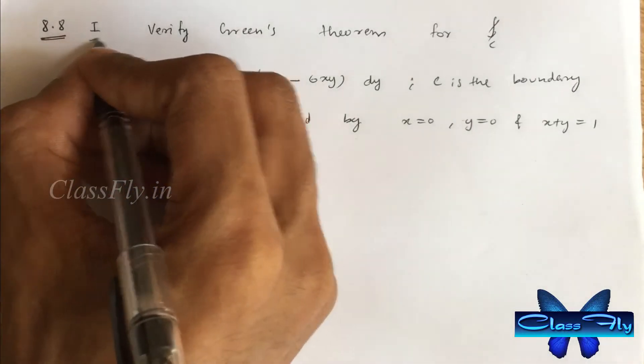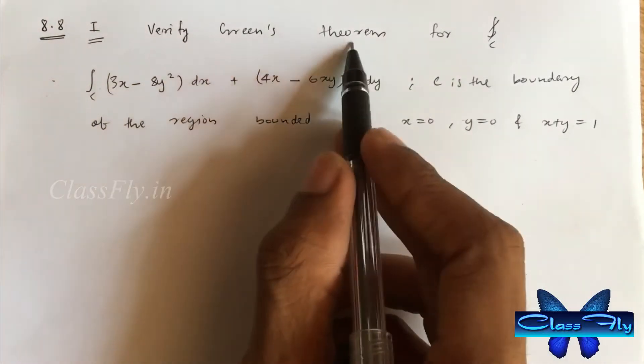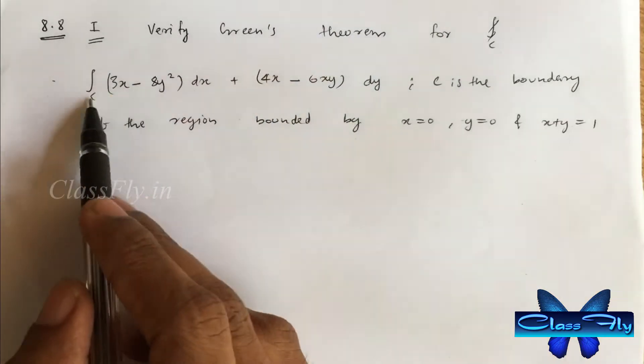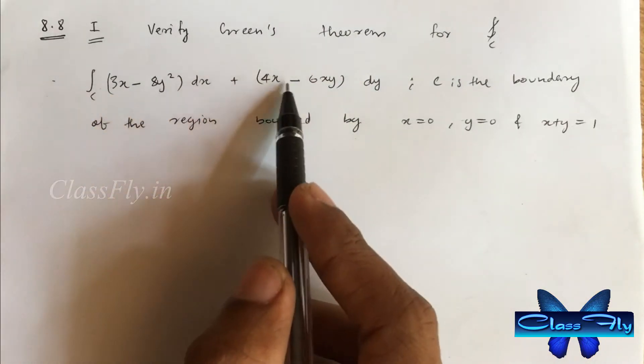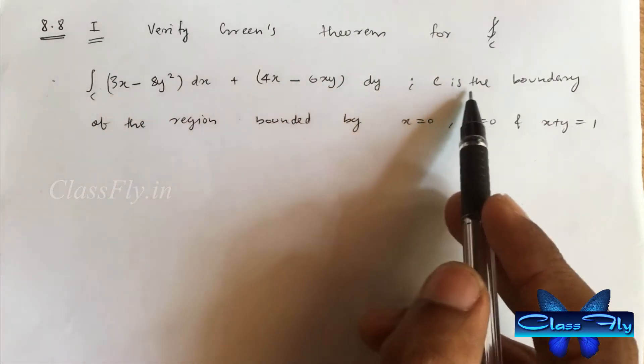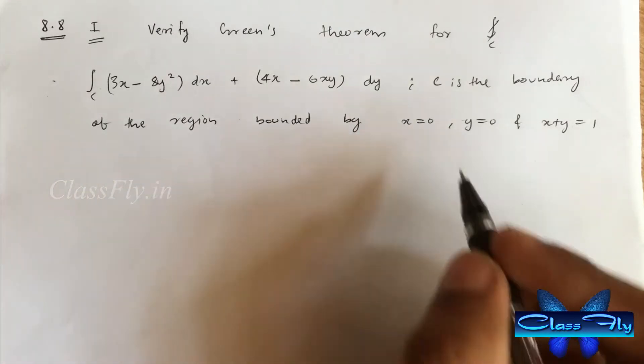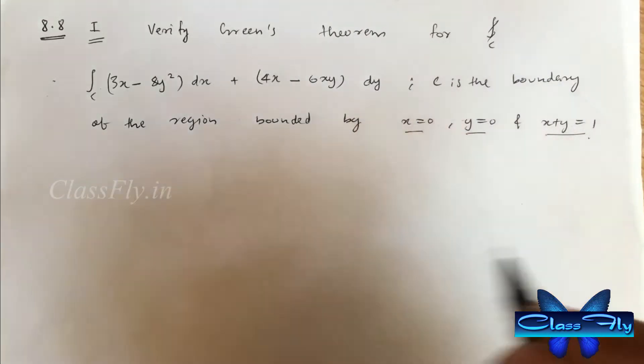Exercise 8.8, first question. Verify Green's theorem for integral c 3x minus 8y square dx plus 4y minus 6xy dy where c is the boundary of the region bounded by x equal to 0, y equal to 0 and x plus y equal to 1.